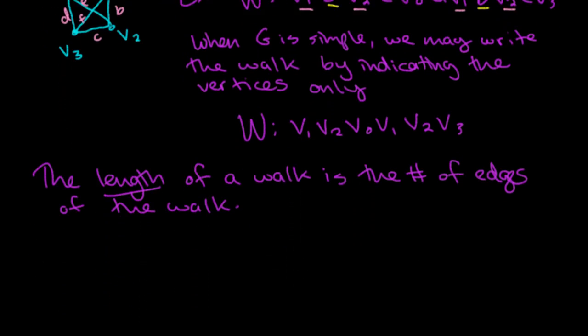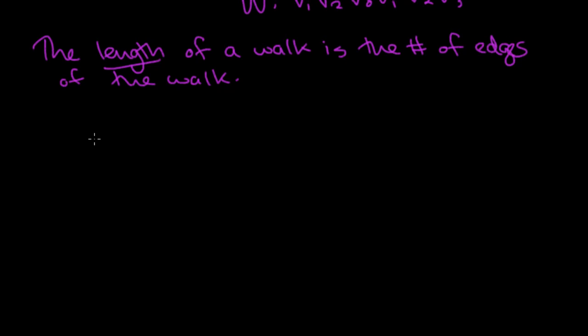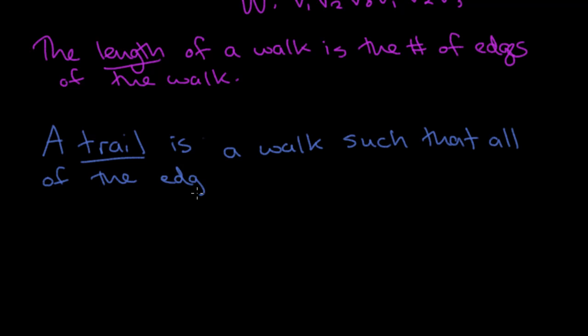So now what is a trail? Maybe you haven't heard the word trail before. A trail is a walk such that all of the edges are distinct. So it doesn't say anything about vertices. You might hit the same vertex again, but you do know that the edges are distinct.